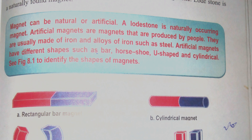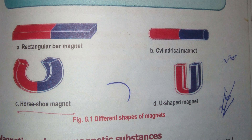Artificial magnets are produced by people. They are usually made of iron and alloys of iron, such as steel. Artificial magnets are made in different shapes, such as a rectangular bar magnet and a cylinder magnet.